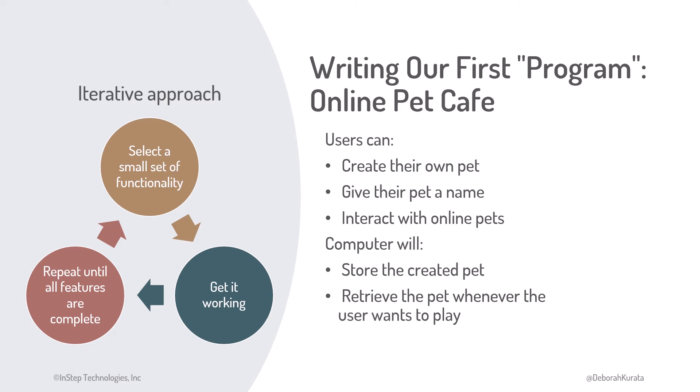Let's stop for a moment and think about this. Why would you develop a program iteratively? Ever have a really big task, like cleaning out the garage or re-landscaping your yard? It's hard to think through every small detail when facing such a large project. It's often easier to focus on one piece of the task at a time. With that in mind, we'll start our pet cafe app by selecting a simple task and breaking that task into a set of instructions.